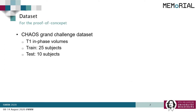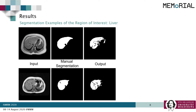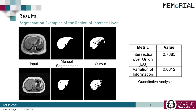For this proof of concept experiment, we used T1 in-phase volumes from the CHAOS challenge dataset. 25 subjects were used for training and 10 were used for testing. Now let's have a quick look at the results. On the left are the inputs, on the right are the outputs obtained from this framework, and at the center the manual segmentation can be seen.